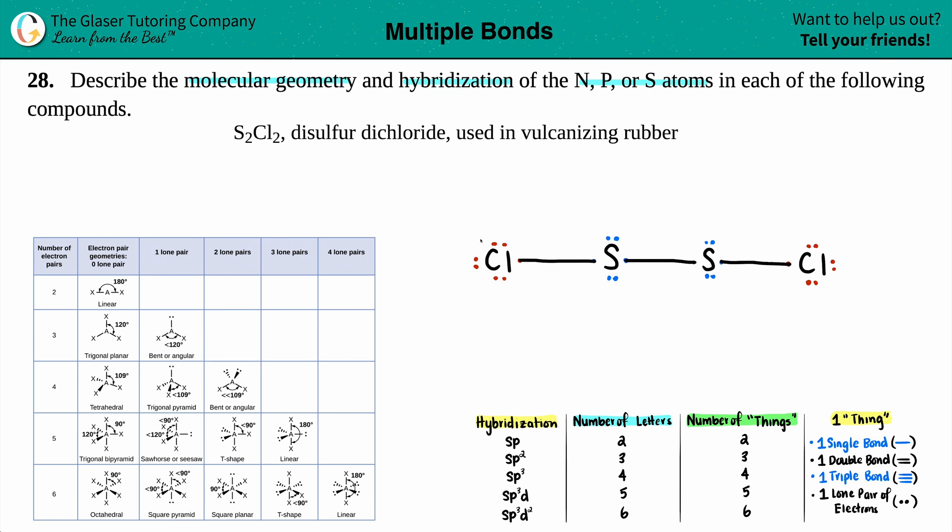So dot to dot, dot to dot, and dot to dot. Do we have the octet? Well yes we do! We have 2, 4, 6, 8 electrons for that chlorine, all good. This sulfur: 2, 4, 6, 8. This sulfur: 2, 4, 6, 8. And chlorine: 2, 4, 6, 8. So everybody has the octet.